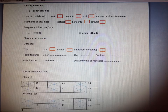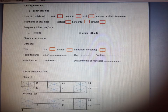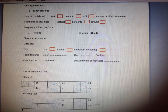We come to clinical examination. For extra-oral examination, check the TMJ — look for pain during opening and closing. Put your fingers in front of the ear and feel for any clicking of the TMJ joint during opening and closing. Check for limitation of opening. Examine the facial texture — look for color changes, ulcers, and swelling. Examine lymph nodes for any tenderness and palpability — is it fixed or movable? Write it down here.